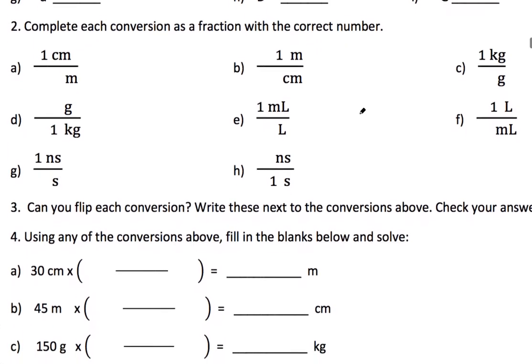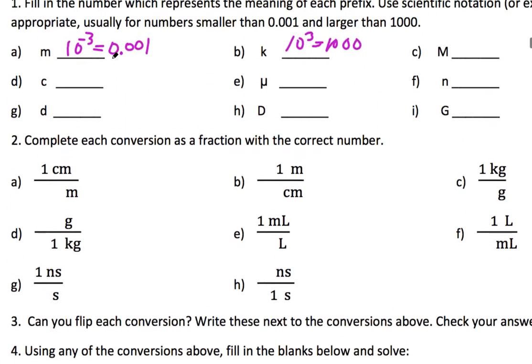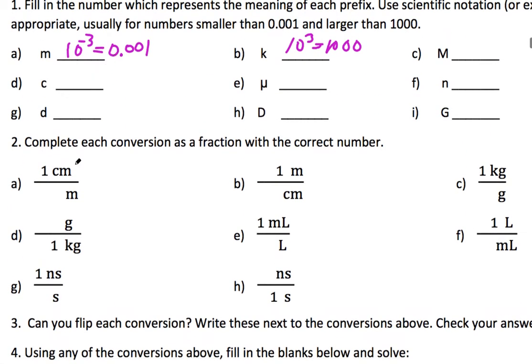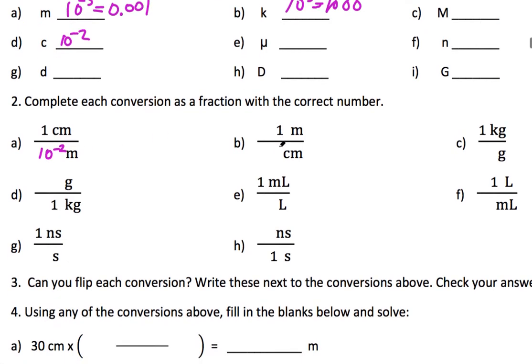The next part is to think about these as conversions like as fractions. So for example, if a centimeter equals 10 to the minus 2 meters, I'm just using substitution here. So centi from up here, 10 to the minus 2. So centi means 10 to the minus 2, you just fill that in.